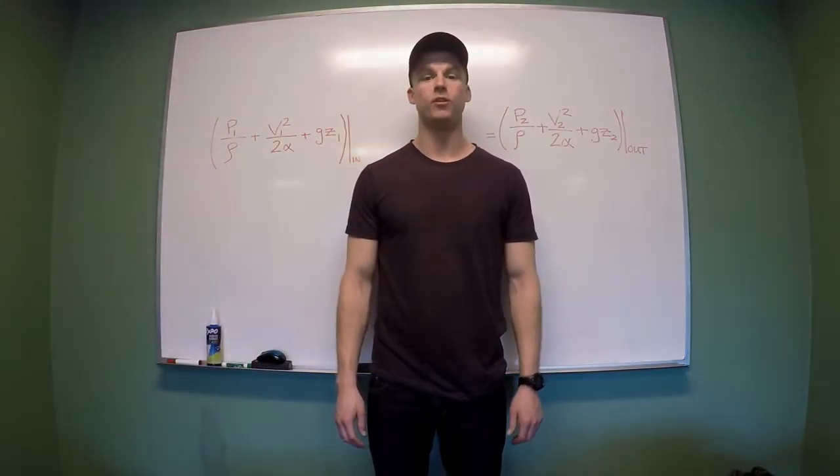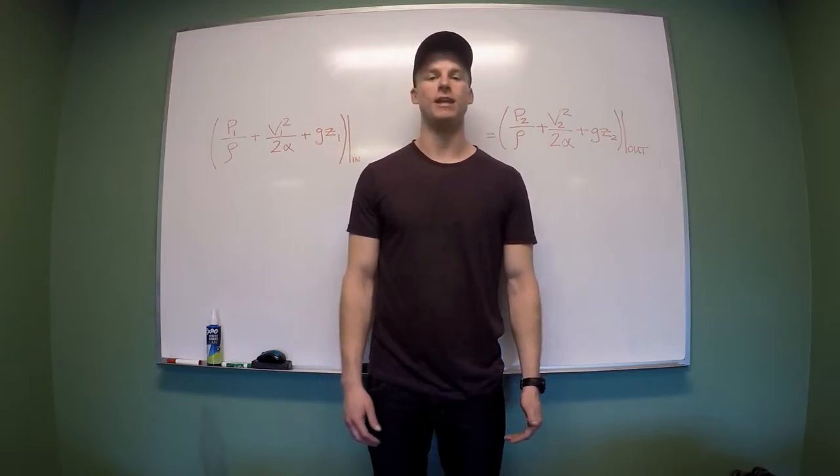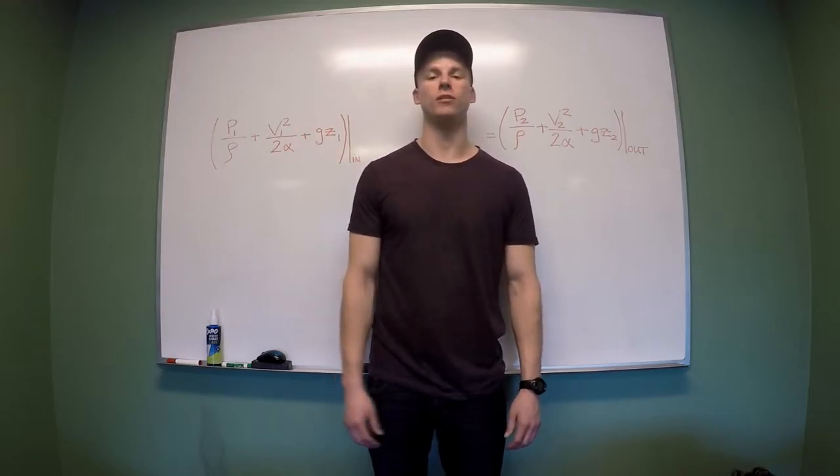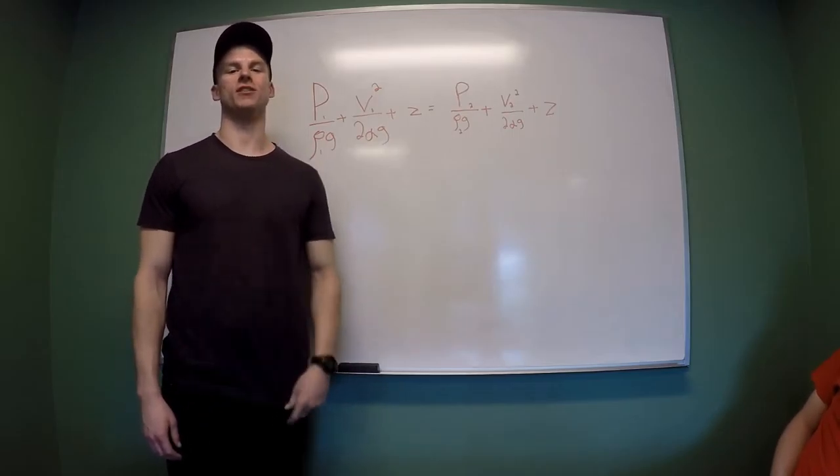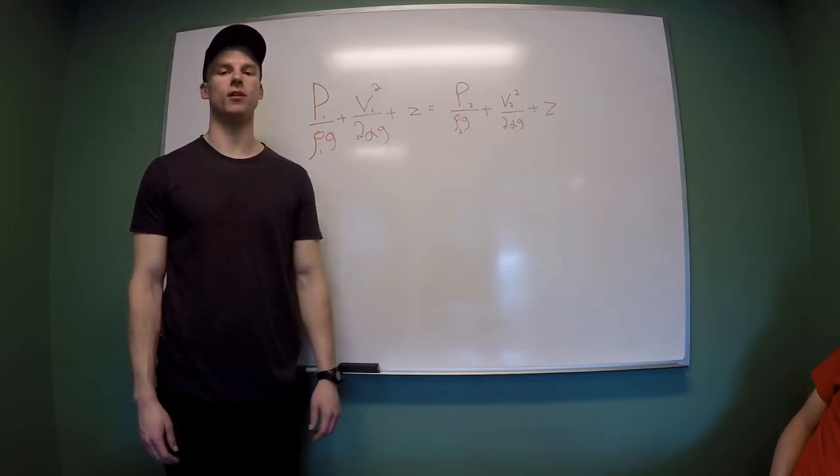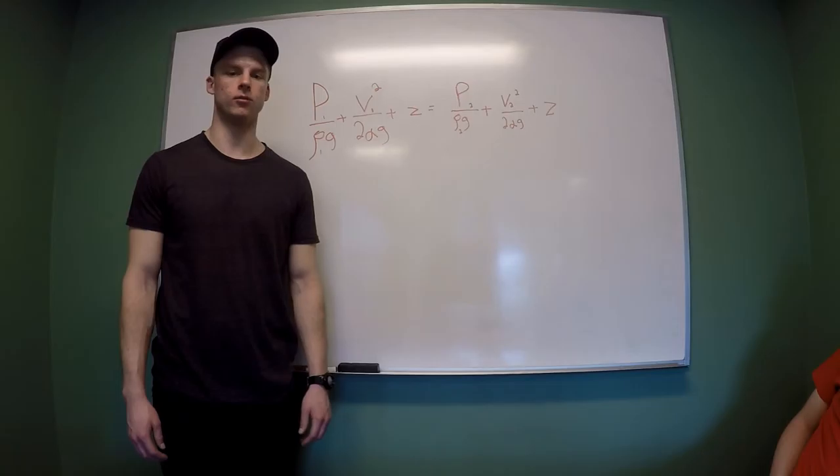The Bernoulli equation can even be simplified further in certain situations. For example, if there is no height difference between the two points being looked at, or if both of the two points are at the same pressure. Another form of the Bernoulli equation that describes each variable in terms of length is obtained by dividing every term by the gravitational constant, and this form is called the head form of the Bernoulli equation.